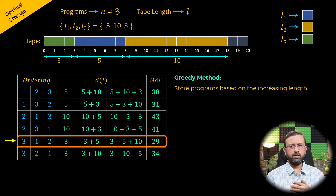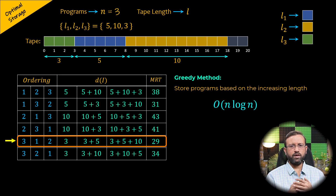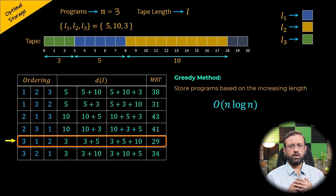The greedy method for optimal storage on tapes simply requires storing programs in non-decreasing (increasing) order of their lengths. This ordering can be carried out in O(n log n) time using an efficient sorting algorithm. So the time complexity of this approach is O(n log n).